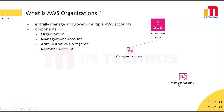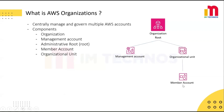Member accounts follow the controls and structure defined by the management account. To manage accounts more effectively, AWS provides organizational units, or OUs. These help you group accounts based on environments like dev, test, prod, or teams like security and networking. You can apply policies at the OU level and all accounts inside that OU automatically inherit them.